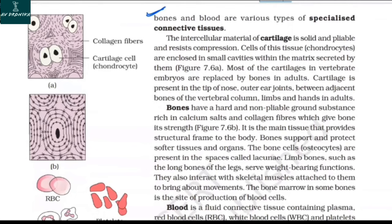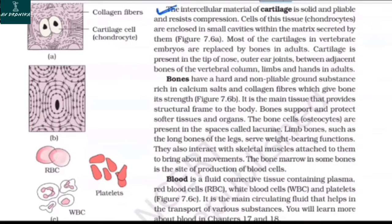The intercellular material of cartilage is solid and pliable and resists compression. Cells of this tissue, called chondrocytes, are enclosed in small cavities within the matrix secreted by them. Most cartilage in vertebrate embryos is replaced by bones in adults. Cartilage is present in the tip of the nose, outer ear, joints, between adjacent bones of the vertebral column, limbs, and hands in adults.